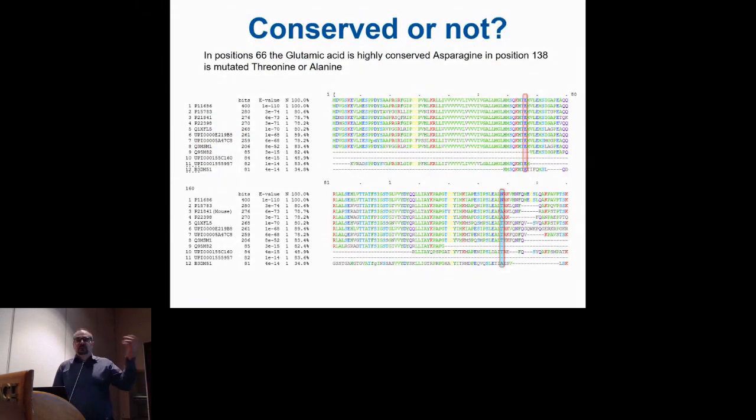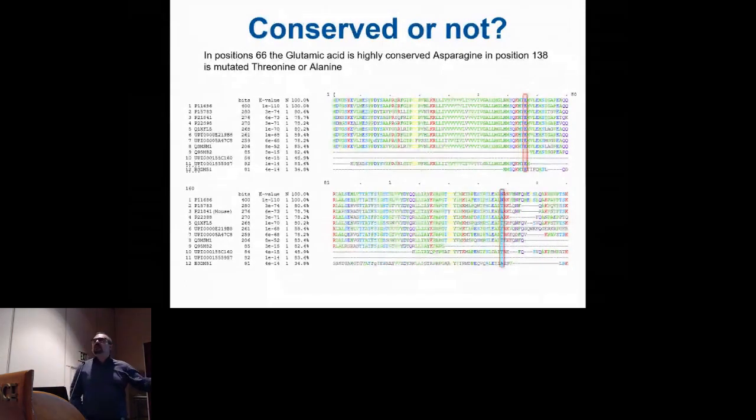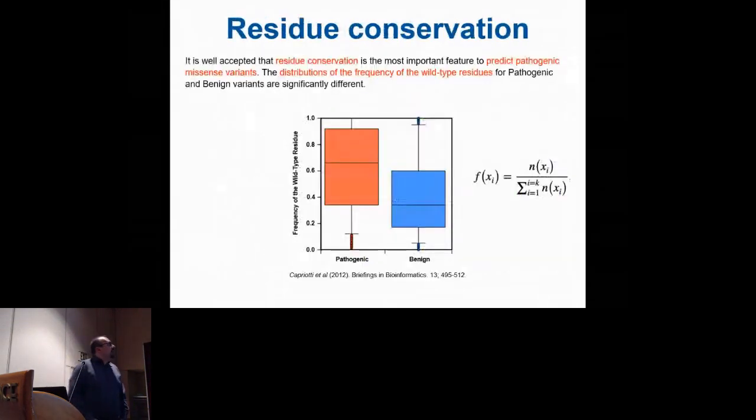The idea is that if you take a protein and align it with a set of homologues that you believe are doing the same function, you take a position and calculate the conservation. If this position is fully conserved, there is more probability that if you mutate this amino acid, you are going to have an effect on the function of the protein, and a higher probability that this mutation can cause a disease. On the other way around, if the position is less conserved, you expect that a mutation is less harmful.